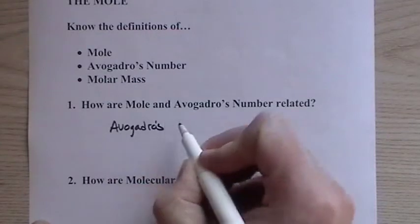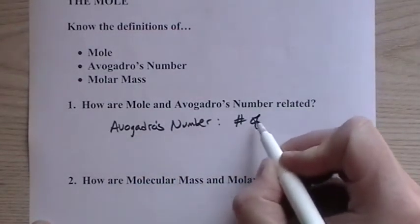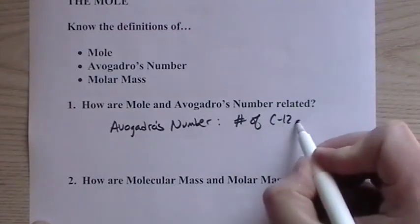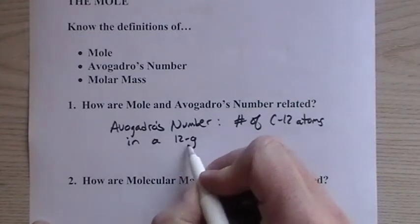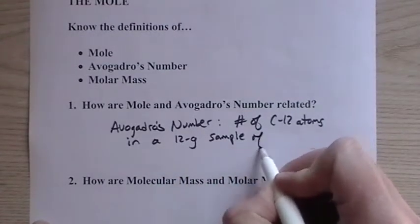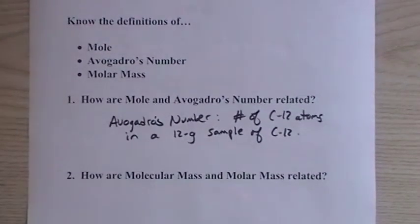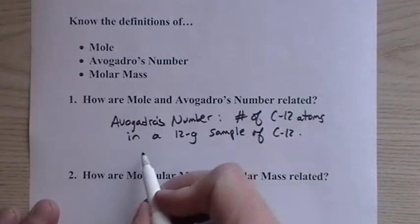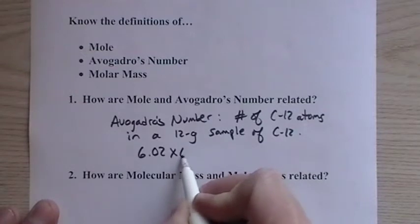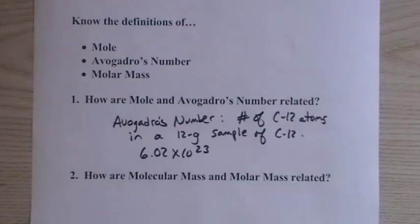Avogadro's number is defined as the number of carbon-12 atoms in an exactly 12-gram sample of carbon-12. So we take 12 grams of carbon-12 and the number of atoms we find is 6.02 times 10 to the 23rd. Avogadro's number is based off of a definition.